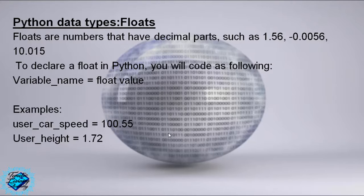10.015. To declare a float in Python, you will code as following: variable_name = float value.